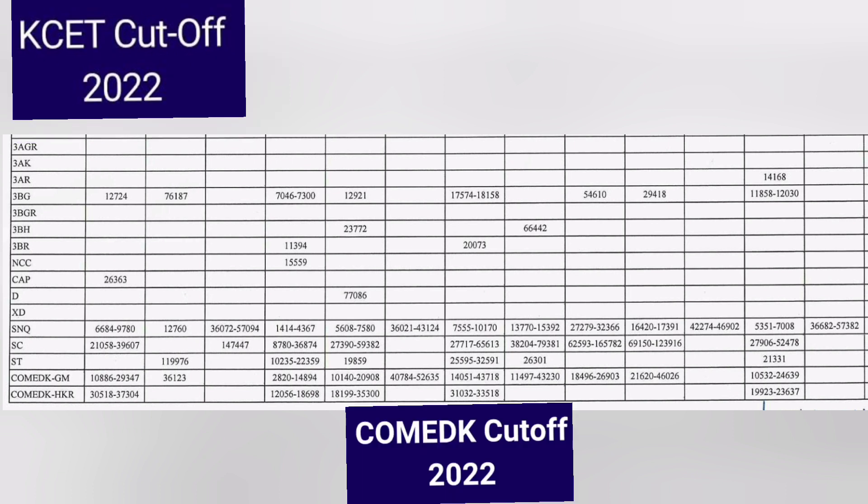The table also shows the COMEDK cutoffs. The last two rows show COMEDK GM and COMEDK HKR (Hyderabad Karnataka Region). Under COMEDK, the Computer Science cutoff opened at 2820 and closed at 14,894, so students under 15,000 rank can get CSE. CSC in AIML is available between ranks 10,000 and 20,000.